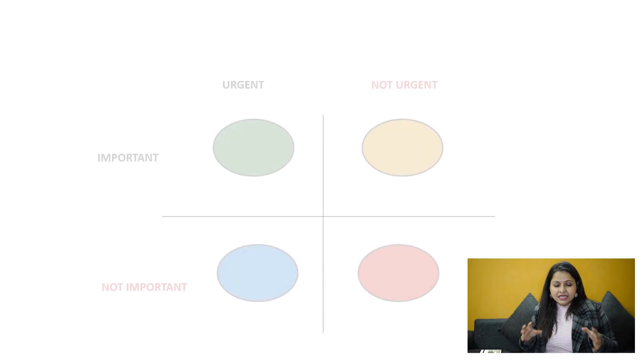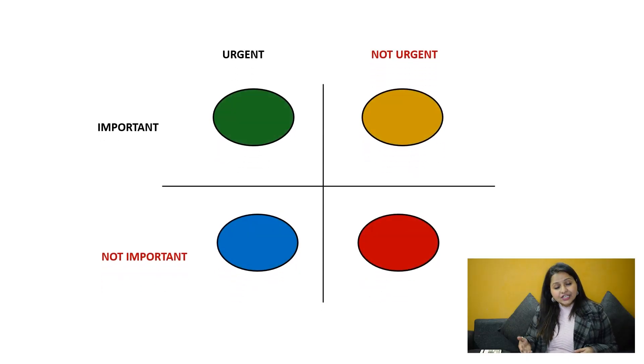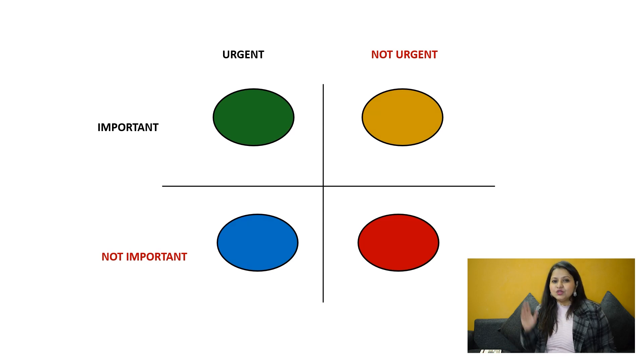First, I would begin with the Eisenhower Matrix. Now, what is that? Before I show this matrix to you on screen — this matrix talks about quadrants, four quadrants. These are not the quadrants we learned in mathematics, but quadrants for urgent, not urgent, important, and not important, as you can see here.